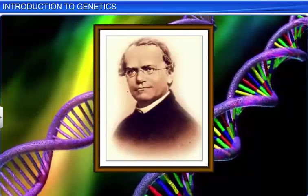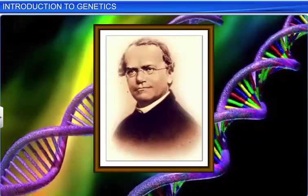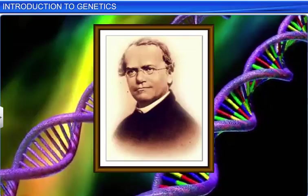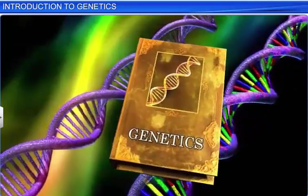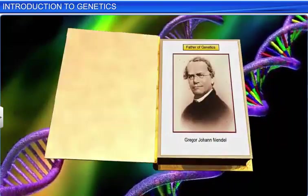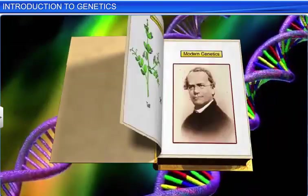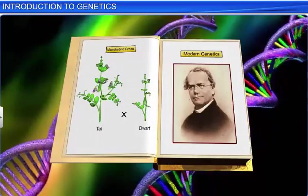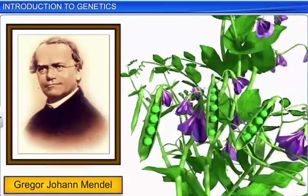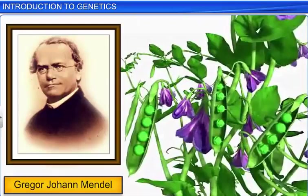It was only in the mid-19th century that advances were made in the field of genetics by Gregor Johann Mendel. Mendel was an Augustinian priest and scientist who gained fame posthumously for spearheading the science of genetics. He proposed several laws of inheritance by conducting extensive research and hybridization experiments on garden peas, or Pisum sativum, for about seven years.